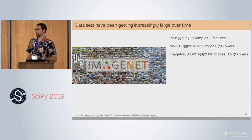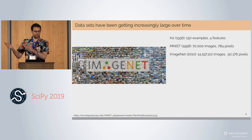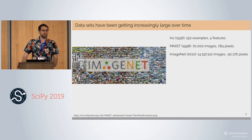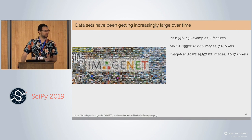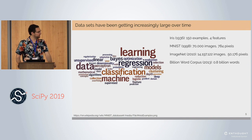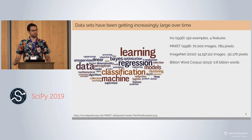Then around a decade later, ImageNet came out with over 14 million images at higher resolution — orders of magnitude bigger still. But this growth in data hasn't been just in images. The billion word corpus came out a few years after that, which curiously doesn't actually have a billion words in it — 800 million is apparently close enough to claim that title.